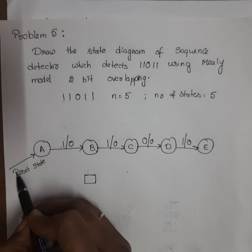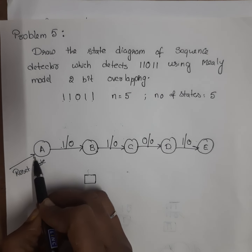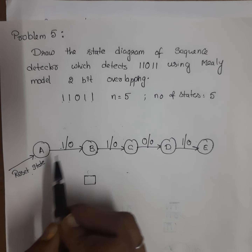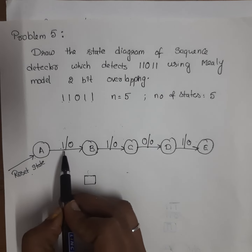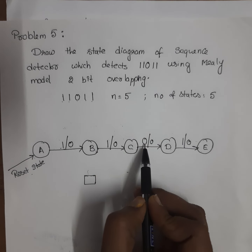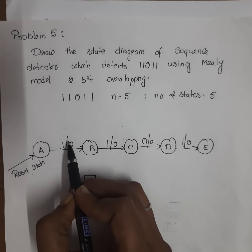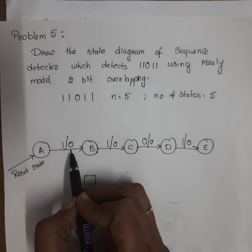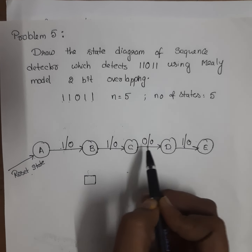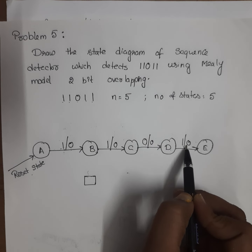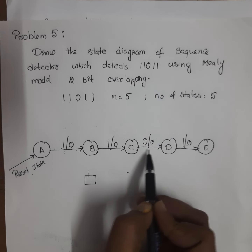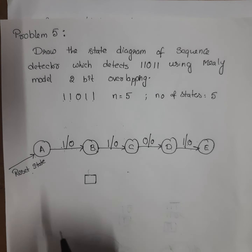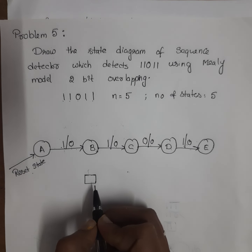The first state is called the reset state or initial state. Next, draw the sequence 1101. Here the pattern is not detected, so the output should be 0 for all the cases: 0, 0, 0, 0. So this is the first step. Next, draw the square boxes.